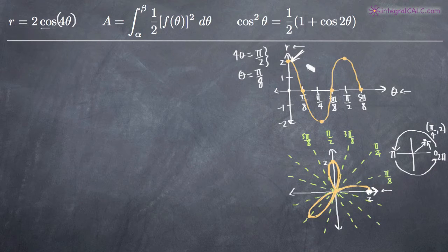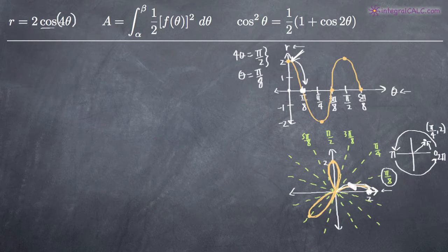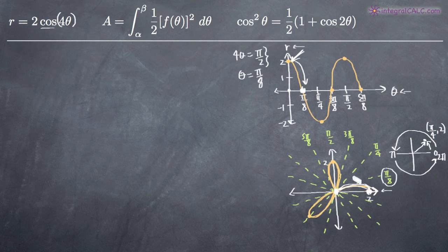As the graph approaches the angle pi over eight, the distance away from the origin becomes zero — r equals zero right there. We have the angle pi over eight marked off, and as the graph approaches that angle it gets sucked into the origin. It approaches that angle, comes back in, and reaches the origin at a distance of zero. I like to graph things because it makes it a lot easier to visualize what we're looking for.